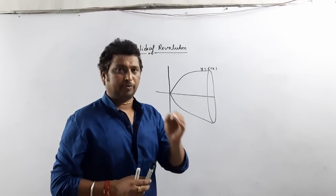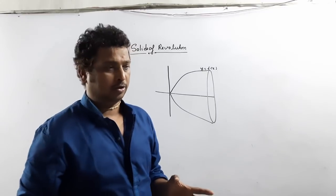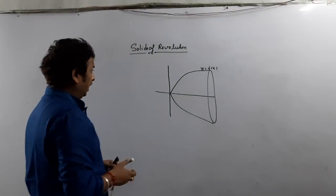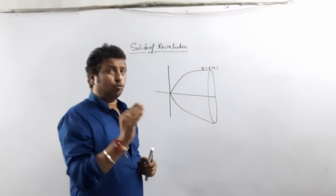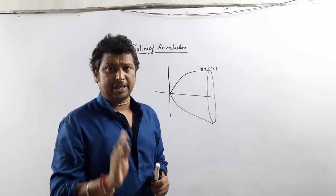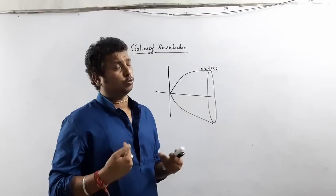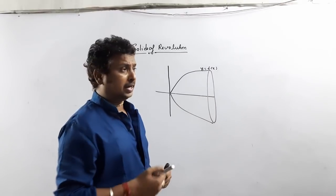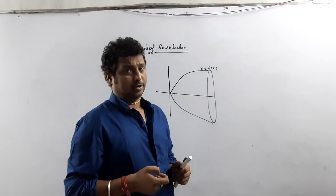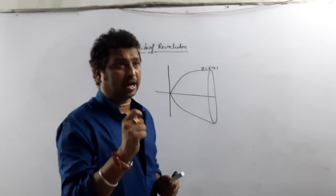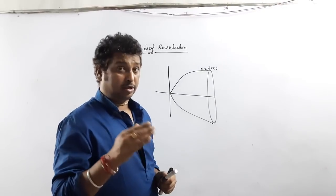Whatever is given, your first step is to go ahead and think about the cross-sectional area, because we are going to calculate the volume of the solid of revolution by the disk method. The disk method is totally based on cross-sectional area — we are going to integrate the cross-sectional area. When you revolve, it will form like a circle, and the area of a circle is π r².